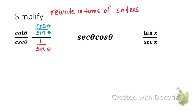How do you divide fractions? Keep, change, flip. So let's keep the first fraction, change the operation to multiplication, and flip the second one. What do you think is going to happen here with the sine? What is my final answer going to simplify down to? Just cosine.